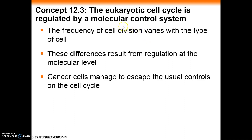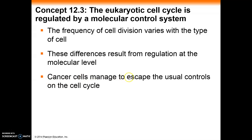Each type of cell within our body has a different frequency of cell division. Some cells never divide, some divide occasionally, and some are dividing constantly — our skin cells and blood cells are dividing constantly, but our neurons, not so much. The difference is due to this molecular control mechanism, which ties in directly with cancer, because cancer cells have developed a way to escape the controls that limit the cell cycle.